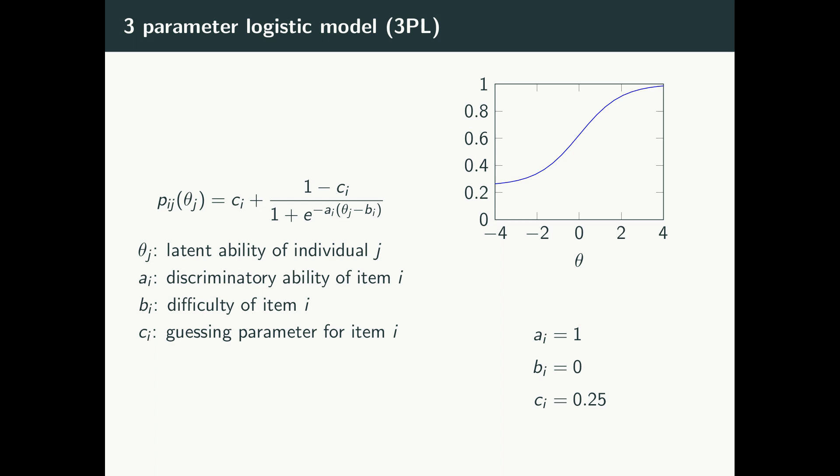This plot shows what is known as the item characteristic curve for an item where the discriminatory parameter A is 1, the difficulty parameter B is 0, and the guessing parameter C is 0.25. A represents the slope at the steepest point of the curve. B represents the level of ability at which an individual has a 50% chance of answering an item correctly, in this case at ability level 0, and C represents the lower asymptote of the curve. The steeper slope indicates that the item is more discriminatory at a narrow range of ability. The lower difficulty parameter means that this item is easier since now an individual with ability of negative 1 has a 50% chance of getting it right, and the lower guessing parameter means that individuals at very low levels of ability are less likely to answer this question correctly.